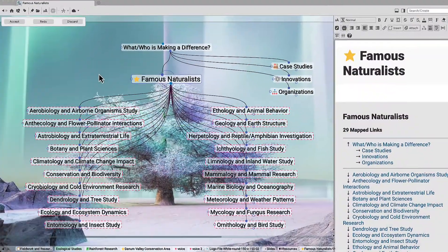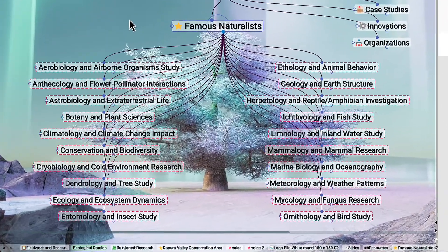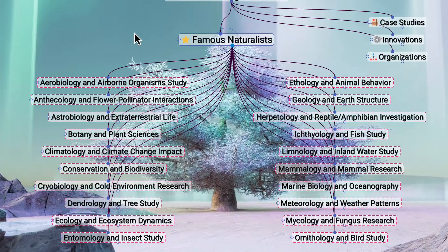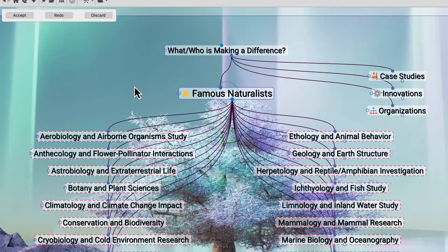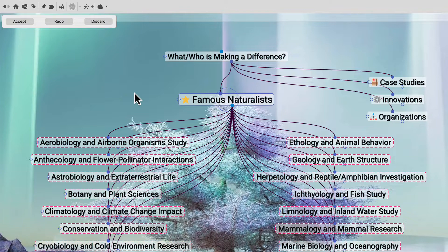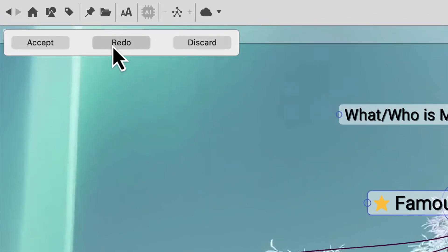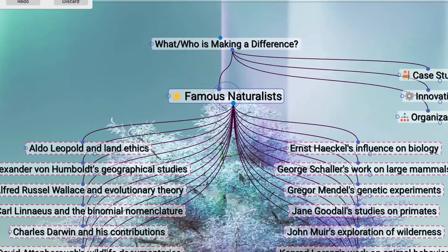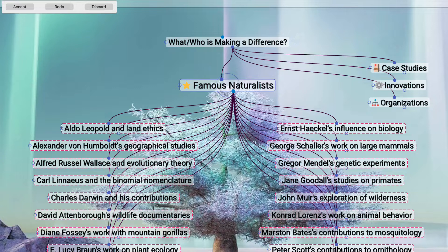In another research brain, I've utilized AI to generate one level of child thoughts under a particular topic, but I'm noticing that AI chose to create categories that famous naturalists might fall into. I'd rather see a list of specific names. I'll redo the thought generation and change the mode of results from category to list. The results are exactly what I was looking for, as well as some names that I hadn't even considered. Thanks, AI!